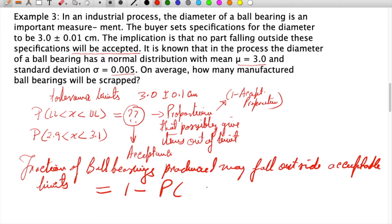The probability of ball bearings falling within limits is P(x₁ < X < x₂), where x₁ is 2.9 cm and x₂ is 3.1 cm. The distribution has mean μ = 3.0 cm and standard deviation σ = 0.005 cm.